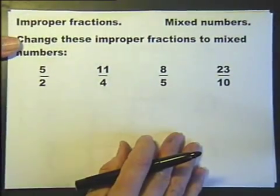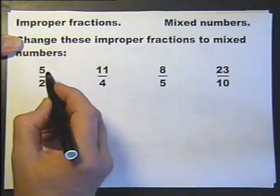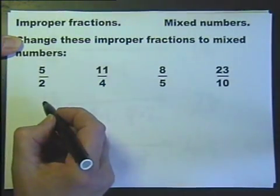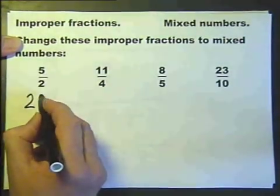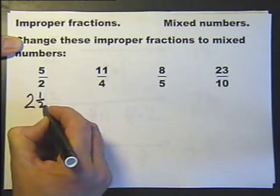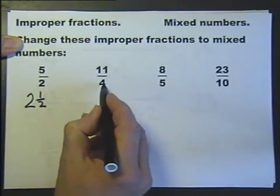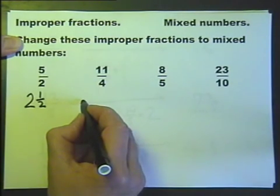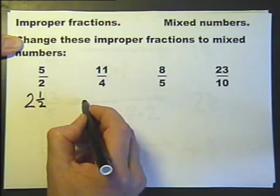Change these improper fractions to mixed numbers. So 5 halves. 4 halves would be 2, so 5 halves must be 2 and 1 half. Another way of actually doing it is to remember that the fraction is the top number divided by the bottom number.